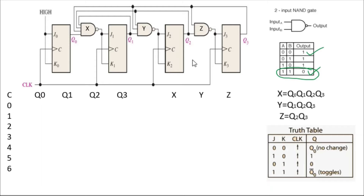I've labeled the gates X, Y, and Z because before applying the next clock, we need to know the output condition from the last clock. For the JK flip-flop, since J0 and K0 are both permanently set to one, this flip-flop will always be in toggle mode — it will toggle every clock cycle.